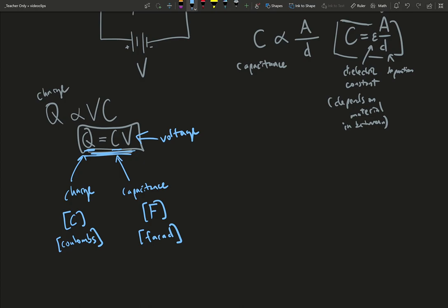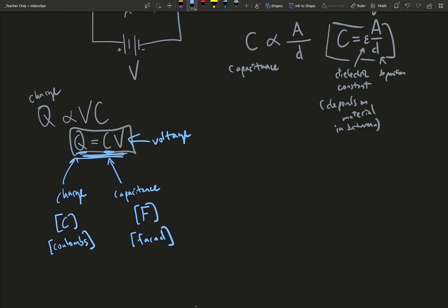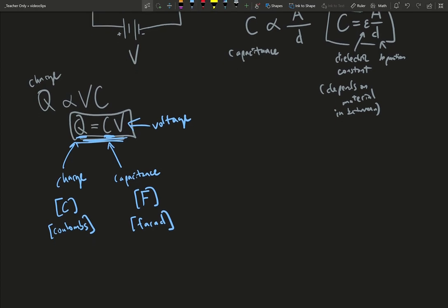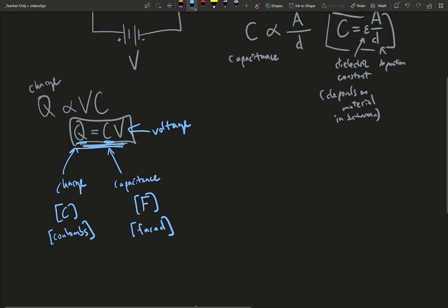So capacitance in an equation gets the symbol C. Even though capacitance starts with C, the unit we use is a farad, hence I have square bracketed here, and the symbol for farad is capital F.